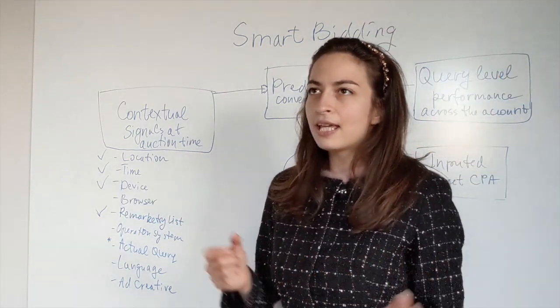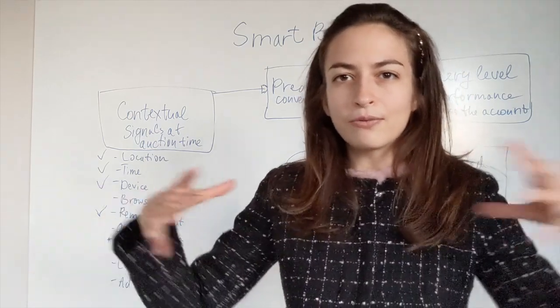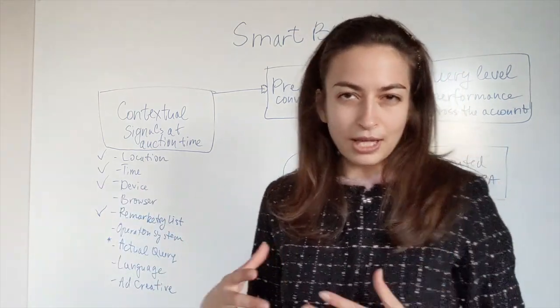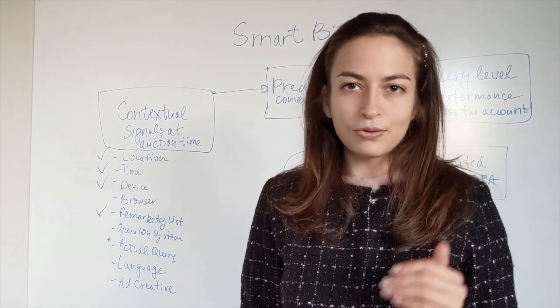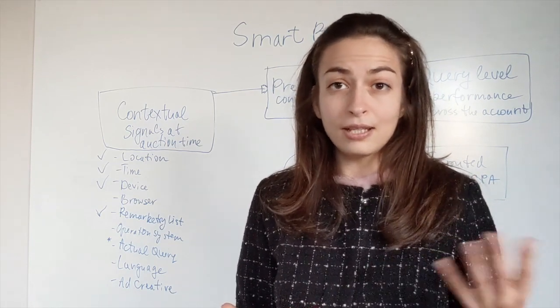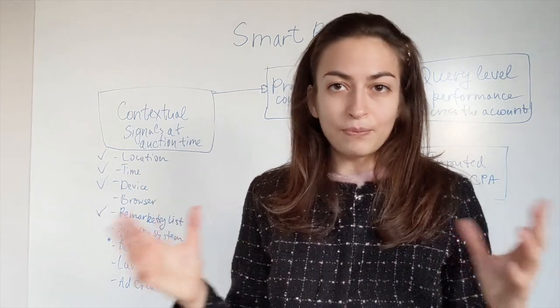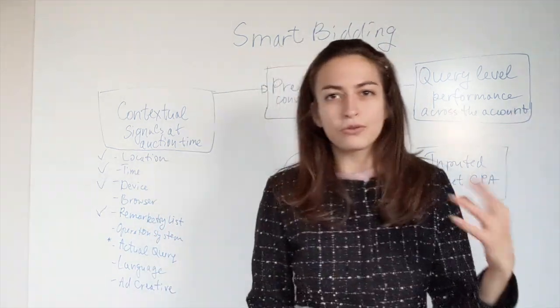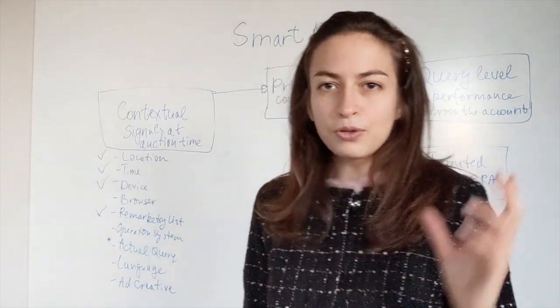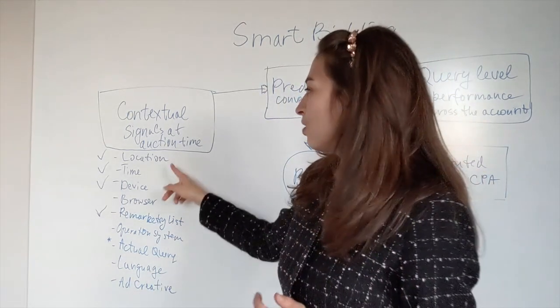Let's look into these individually. For example, location. Until now advertisers with manual bidding could make adjustments. Let's say you want people in the radius around a specific location to see your ad on the top of the result, and you really want to get seen on a top position from people around this area. So you make an adjustment, let's say plus 200% for users in that location.